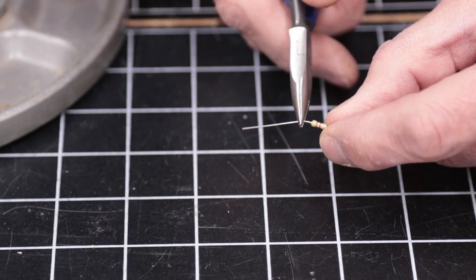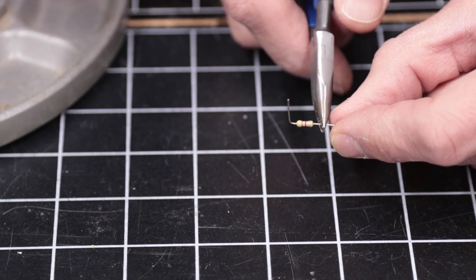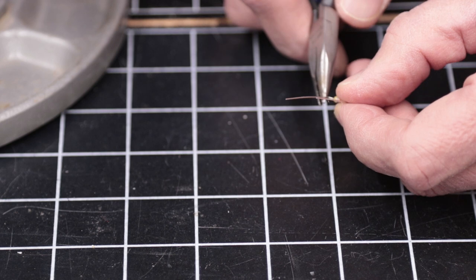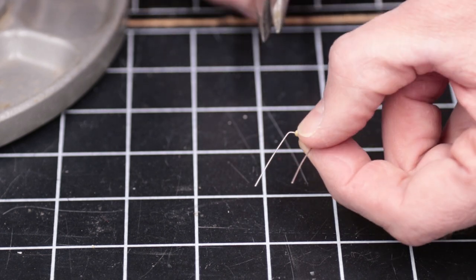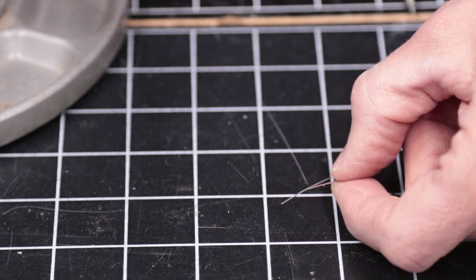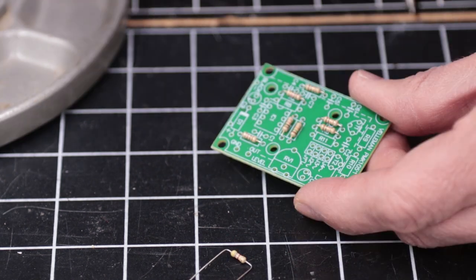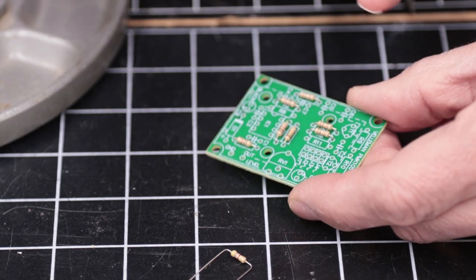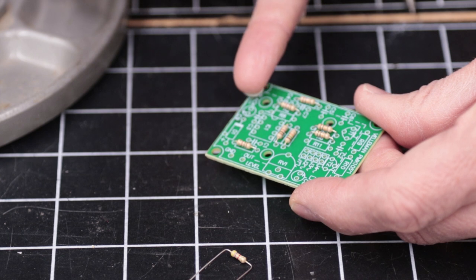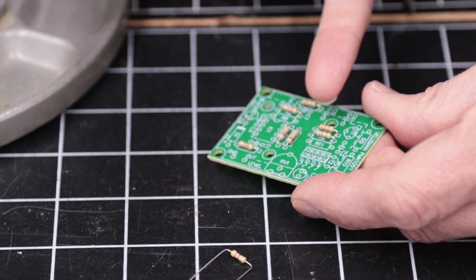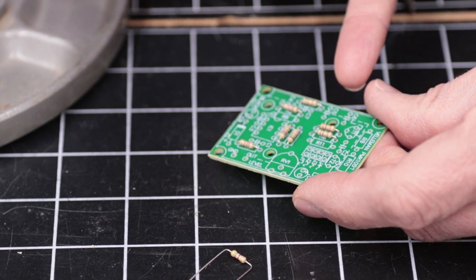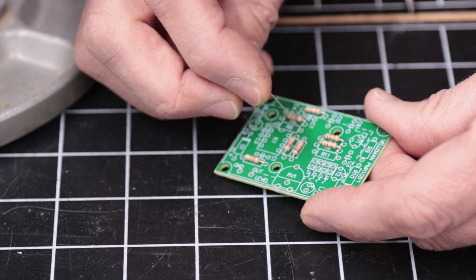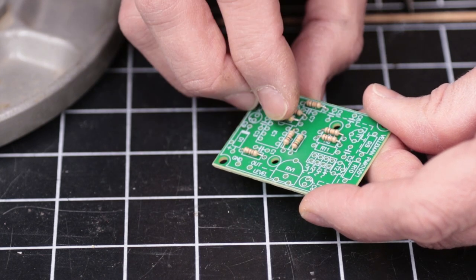When working on these, we want to bend these leads down so that they're going to fit into the holes like so. And then we find the location on the circuit board that they go. In this case, this is R8. And R8 goes right in here. So we'll just put this right in here like so.